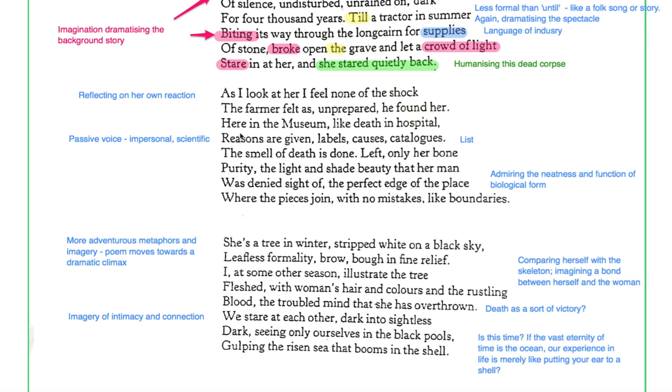Here in the museum like death in hospital reasons are given labels causes catalogues. This is the passive voice, reasons are given, we don't know who's giving the reason, some scientist some archaeologist somewhere. Reasons are given, that's the passive voice and it seems impersonal, it seems scientific. We would expect it to be impersonal really. This is a 4,000 year old body. There isn't a living being there so it needs labeling, cataloging. But of course she's developed this connection with it, so there's just a juxtaposition there between the coldness of this scientific inquiry and the intimate connection that she's felt with the woman behind this story that she's learning about. The smell of death is done. Well the body is decomposed, there's no smell of death because it's just the body, it's just a skeleton.